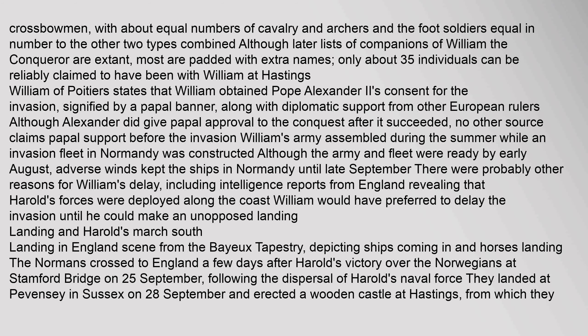The army consisted of a mix of cavalry, infantry, and archers or crossbowmen, with about equal numbers of cavalry and archers, and foot soldiers equal in number to the other two types combined. Although later lists of companions of William the Conqueror are extant, most are padded with extra names; only about 35 individuals can be reliably claimed to have been with William at Hastings. William of Poitiers states that William obtained Pope Alexander II's consent for the invasion, signified by a papal banner, along with diplomatic support from other European rulers, although Alexander did give papal approval to the conquest only after it succeeded.